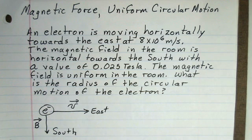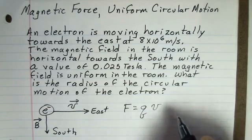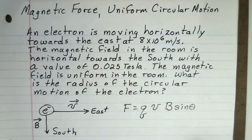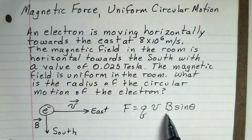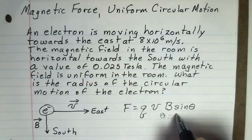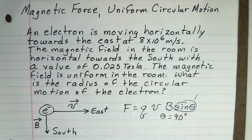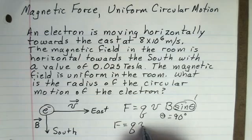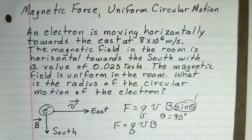Looking at the calculation of magnetic force, we would take the charge on the electron, the velocity of the electron, the strength of the magnetic field, and multiply by the sine of the angle where theta is the angle between the velocity and the magnetic field. In this problem, theta is 90 degrees, so the sine theta factor will just be one. The force on the electron will be the charge, velocity, and magnetic field multiplied together.